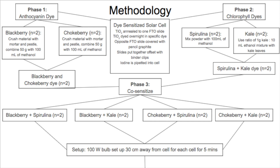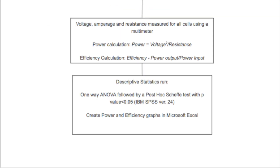Two cells are made for each individual variable group. The setup involves a 100-watt bulb placed 30 centimeters away from the cell for 5 minutes per individual cell. Voltage, amperage, and resistance are all calculated for every experimental group using a multimeter. Power is calculated using the equation voltage squared over resistance, and efficiency is calculated by dividing power output by power input. A one-way ANOVA test followed by a post-hoc Scheffé test with a p-value of less than 0.05 will be run using IBM SPSS version 24. Power and efficiency graphs will also be created in Microsoft Excel.